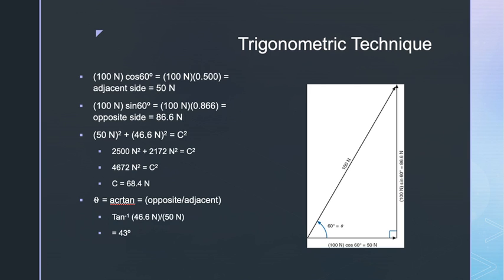To complete this problem, we need the direction of this net external force. Using the arc tangent function: the force triangle consists of the 46.6 Newton upward force (opposite side), the 50 Newton horizontal force (adjacent side), and the resultant 68.4 Newtons (hypotenuse). The net external force acting on the shot is a force of 68.4 Newtons acting forward and upward at an angle of 43 degrees.